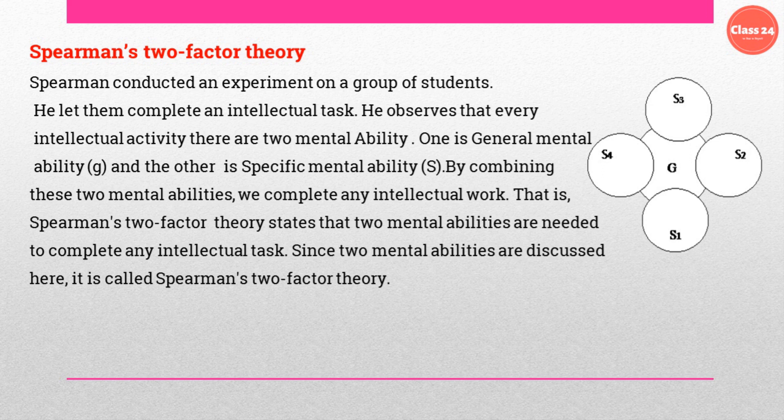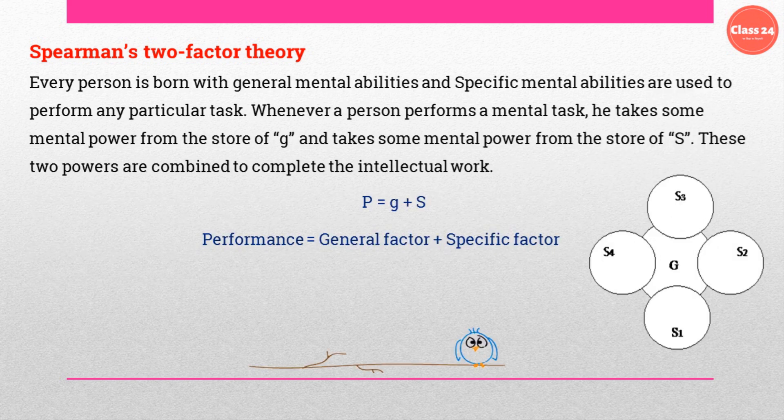As this picture depicts, S1, S2, S3, and S4 are four different types of specific mental abilities. When combined with our general mental ability, we can perform a specific or intellectual task. Every person is born with general mental abilities, and specific mental abilities are used to perform any particular task.